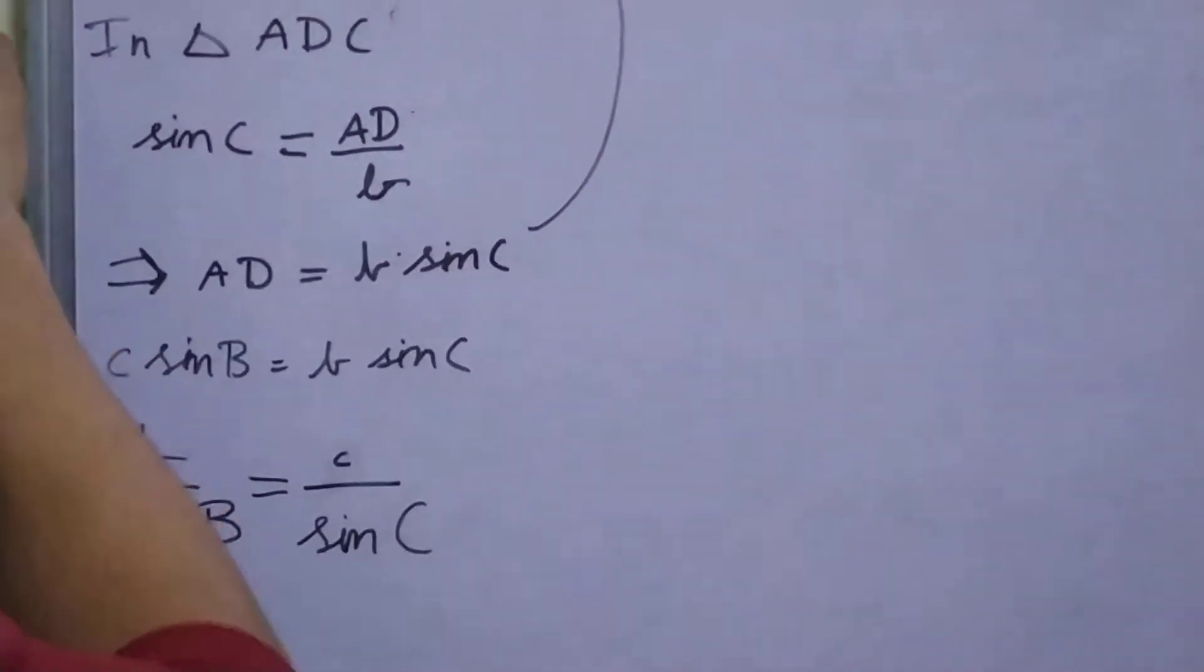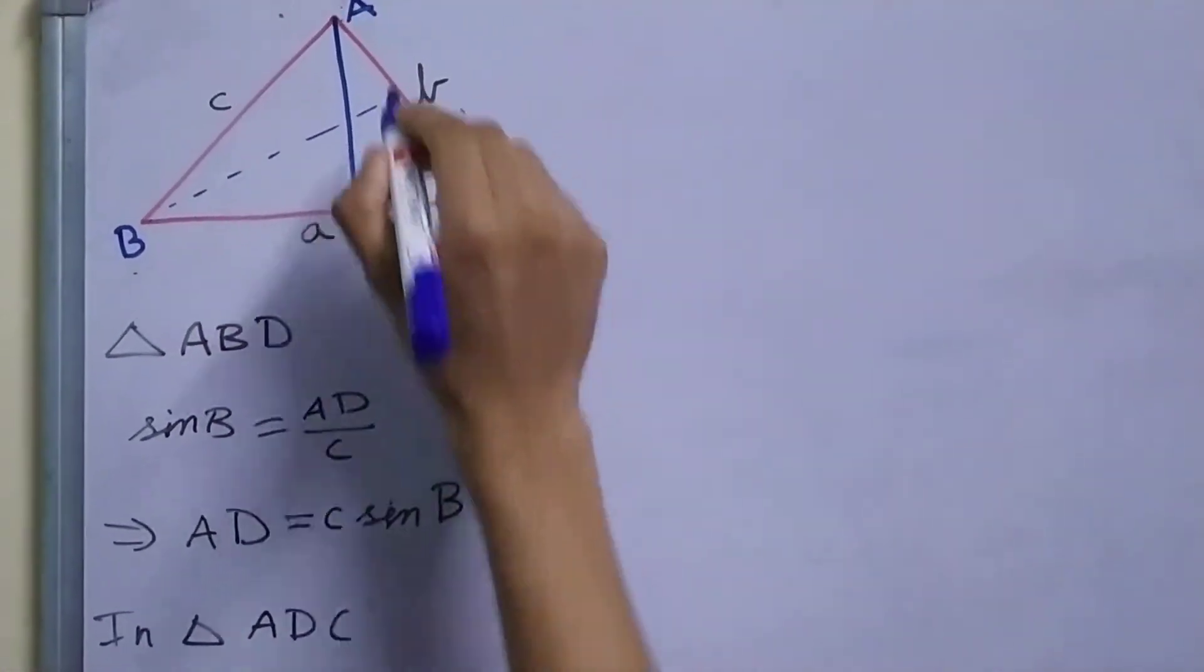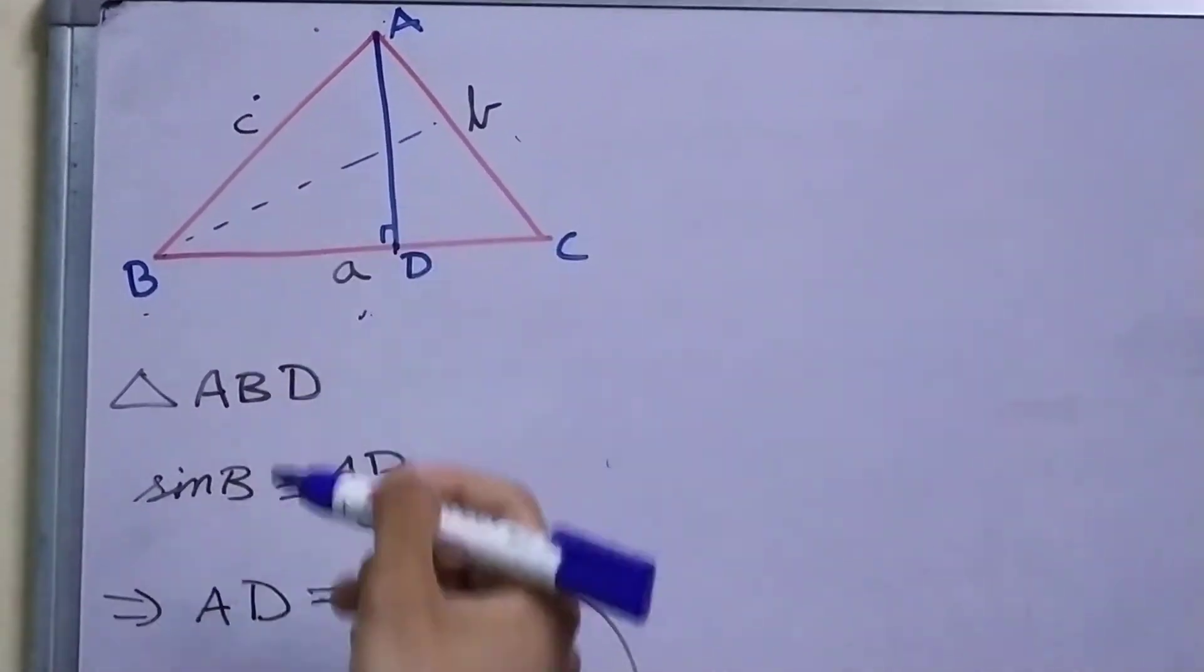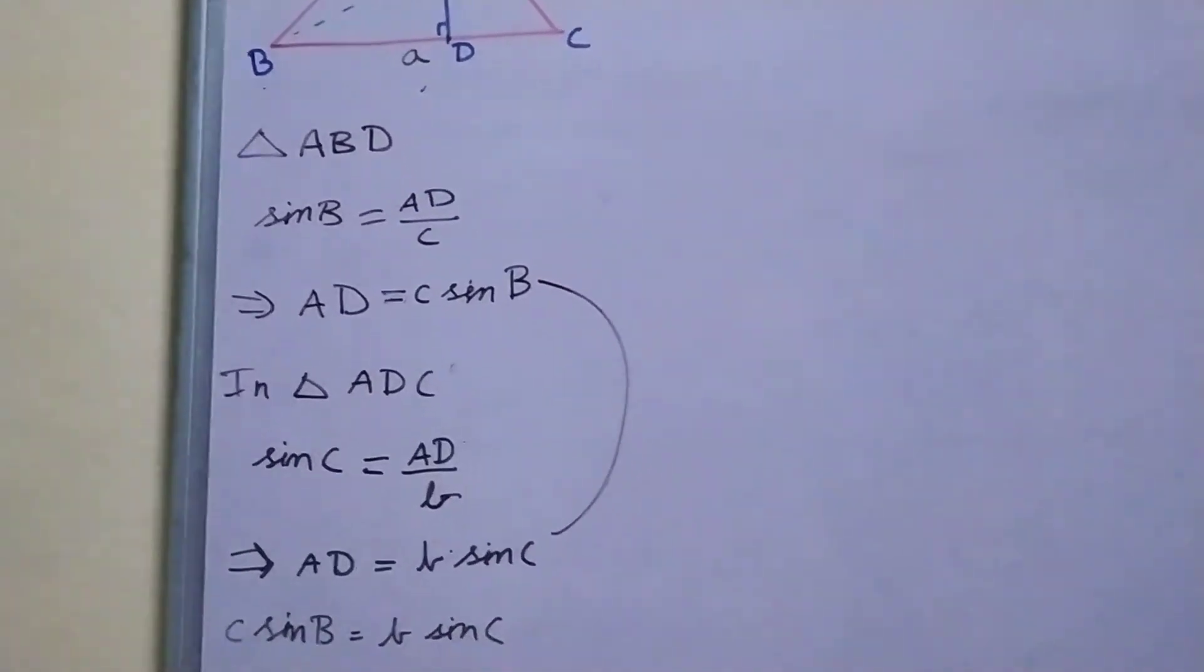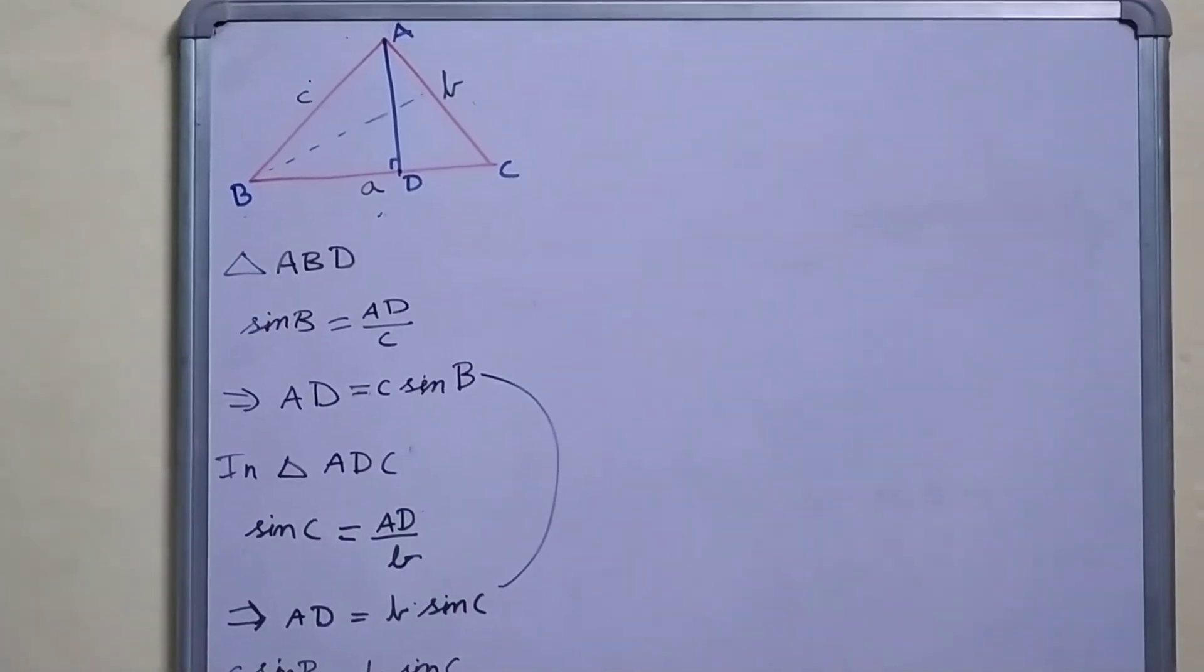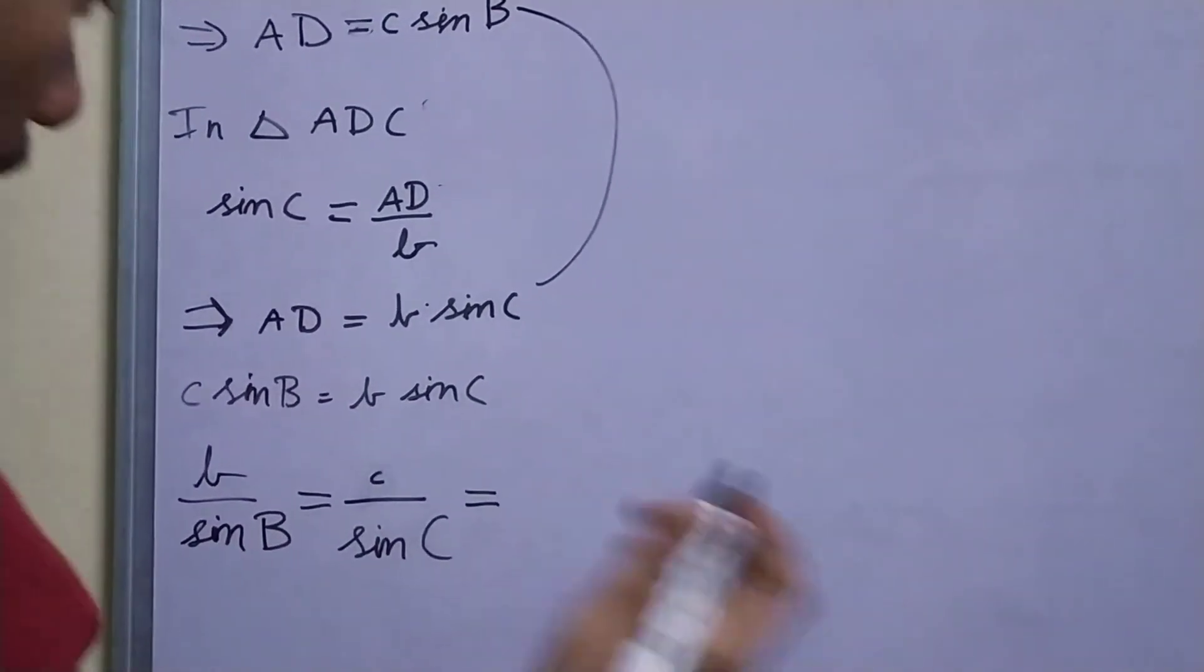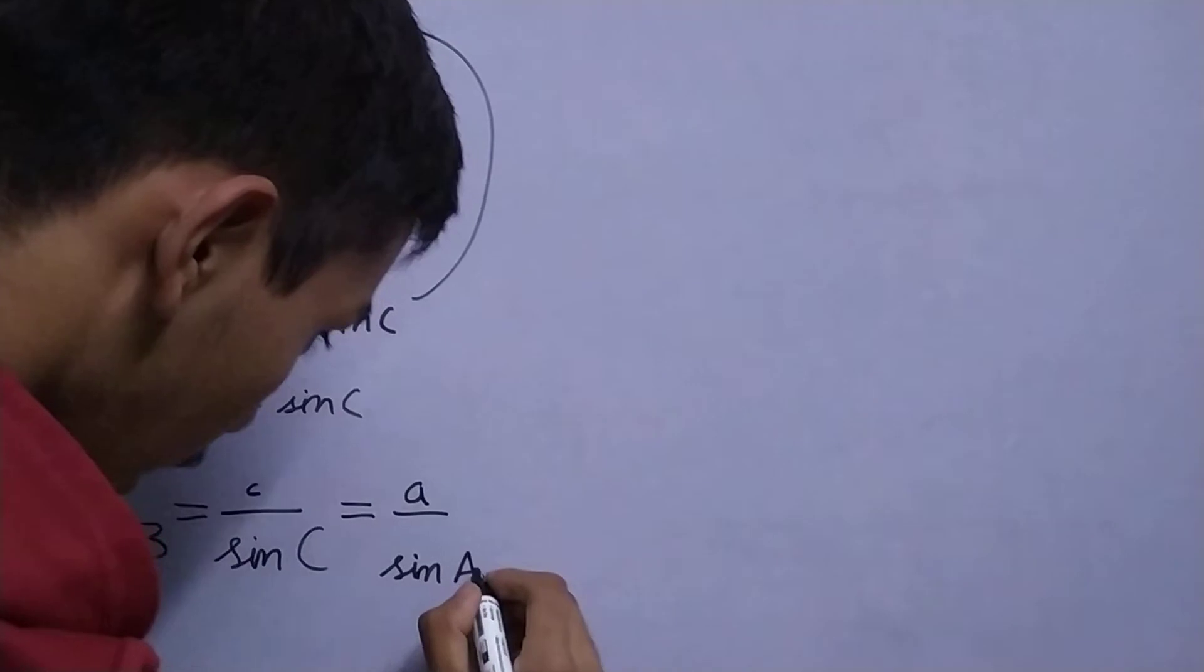And similarly we can do another construction like this and relate these two sides. And since this relation is valid for any two sides—this is valid for A and B, B and C, C and A—from this we can say that b by sine B equal to c by sine C which is equal to a upon sine A.